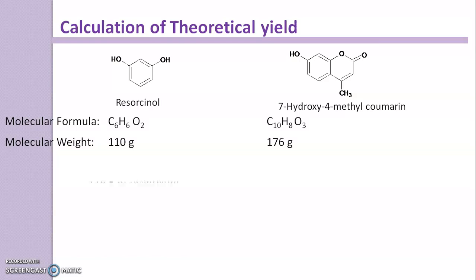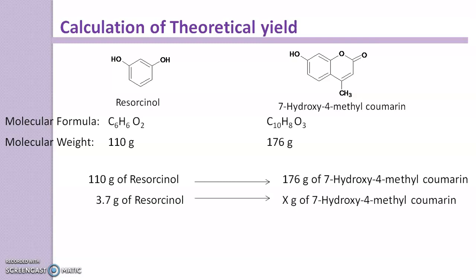So this indicates 110 gram of resorcinol gives 176 gram of 7-Hydroxy-4-Methyl-Coumarin. We have taken 3.7 gram of resorcinol, so how much will it give? Just make a cross multiplication: 176 into 3.7 divided by 110.